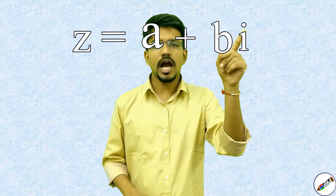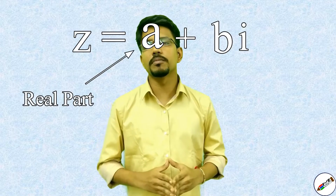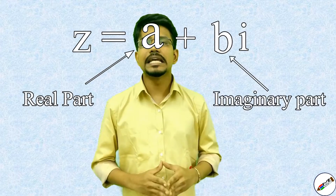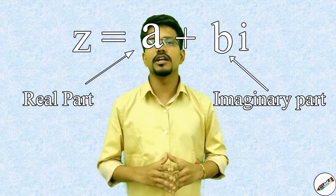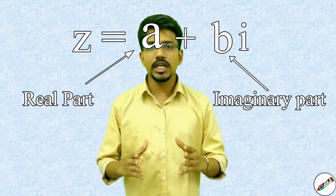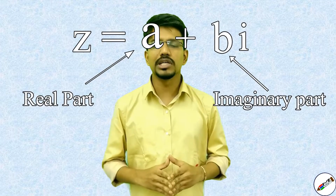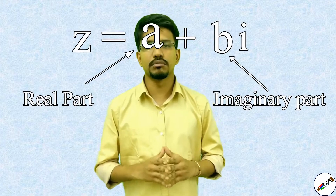A complex number is represented by z, which is written as a plus bi, where a is called the real part of the complex number and b is called the imaginary part of the complex number, where a and b are both real numbers.